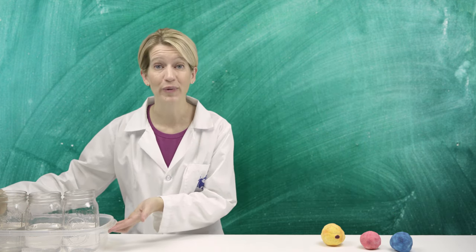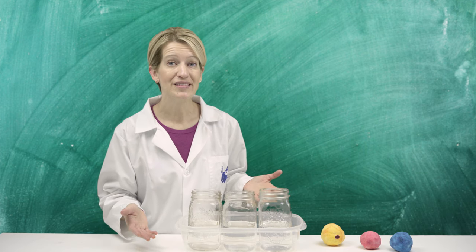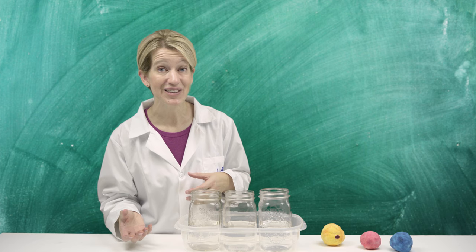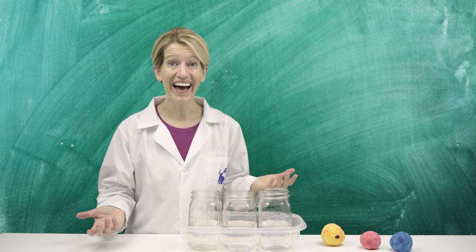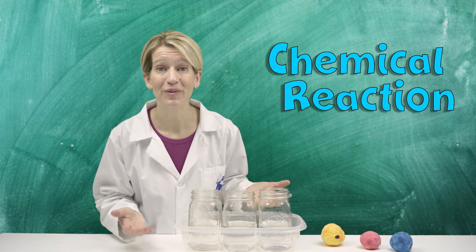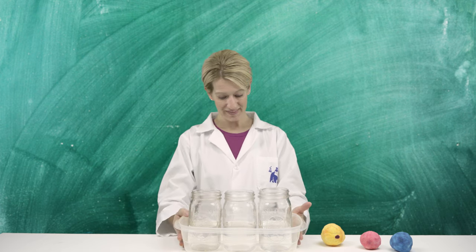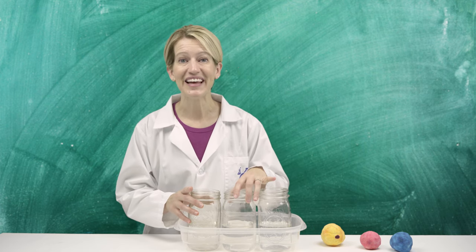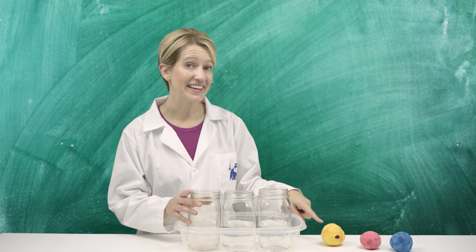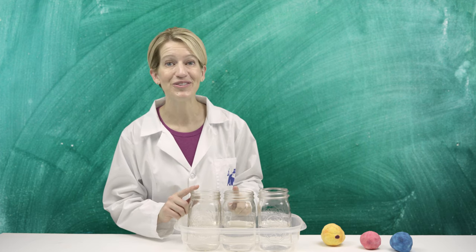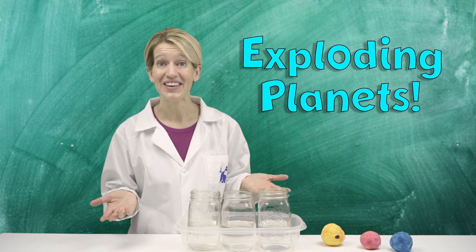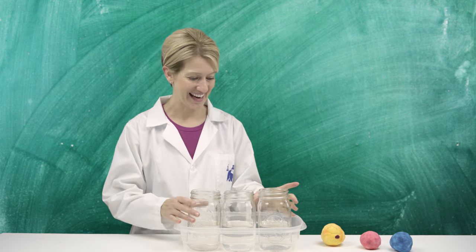So next we need three jars, and in each of the jars we've put vinegar. Do you know what happens when you mix vinegar and baking soda together? You get a chemical reaction that causes a lot of foam. So let's go ahead and put our planets into the jars, and you'll see why we call it exploding planets. Are you ready? I'm so excited. Get prepared to make a mess.